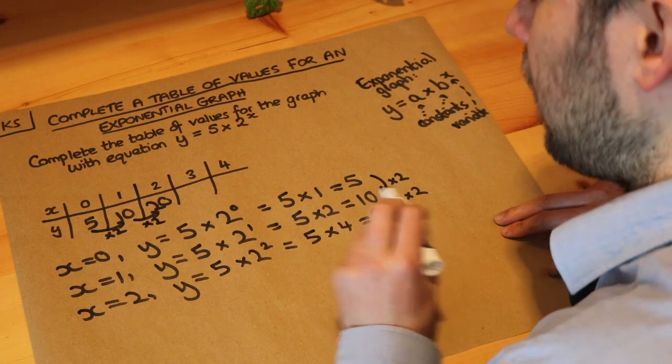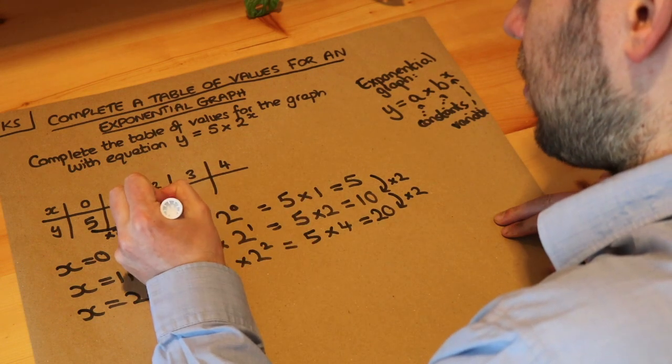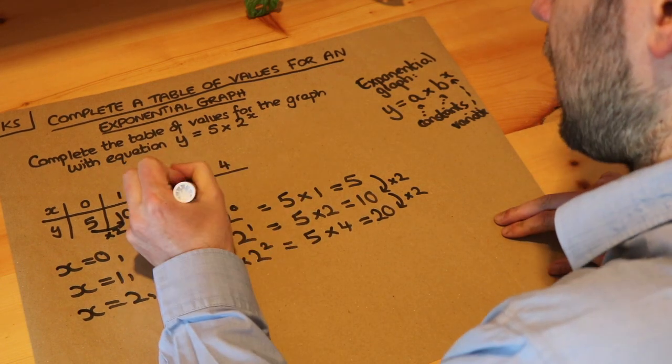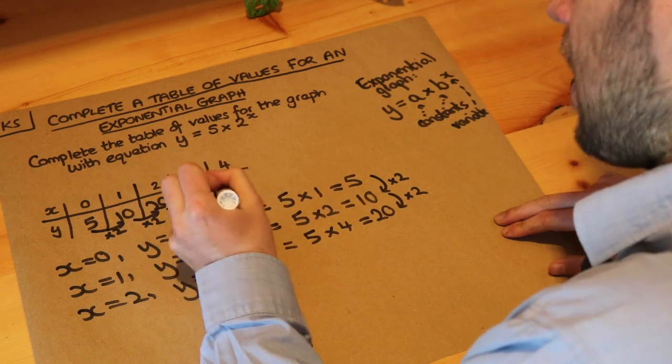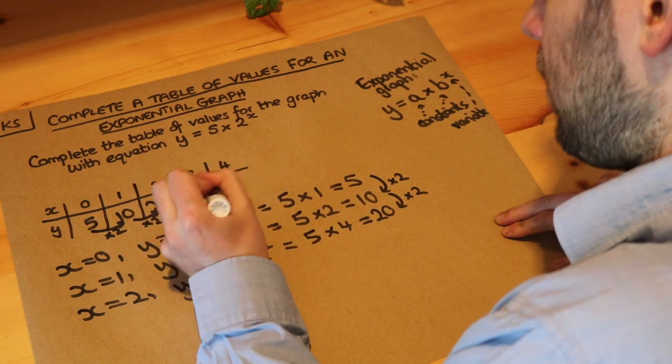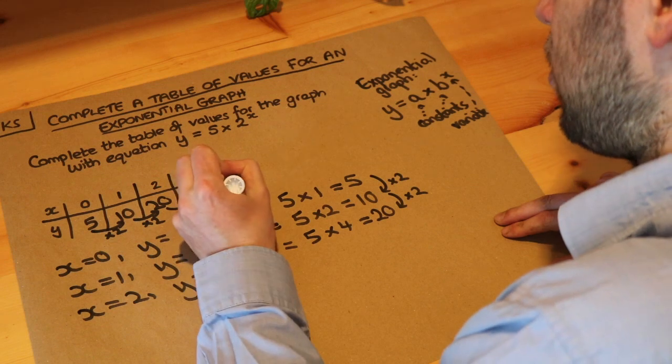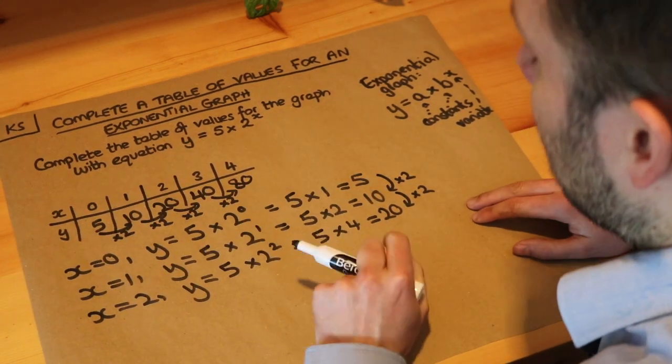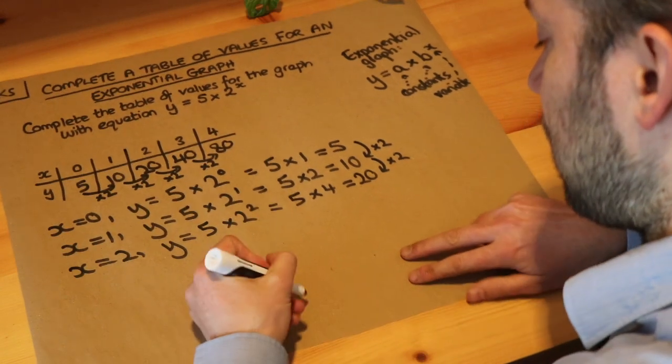So we continue that pattern, we're then going to have five times two cubed, it's going to be two times bigger which is forty. And then when x is four, it's going to be two times bigger again which is eighty.